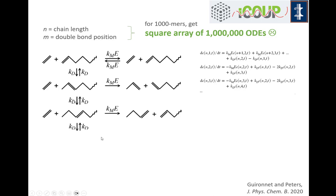The problem with modeling this in a straightforward way is that if you write down rate equations for the number of polymers of each length as a function of where those double bonds reside along the backbone, you find that even for short polymers of 1,000 mers, you get a square array of a million ODEs to solve. This is really not a practical way of making progress.